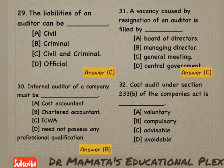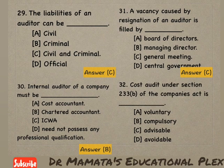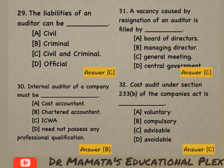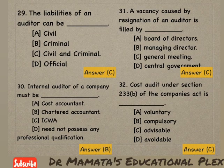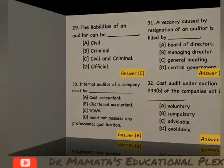Next: Cost audit under section 233B of the Companies Act is — voluntary, compulsory, advisable, or avoidable? Cost audit jo hai under section 233B of the Companies Act woh advisable hai. Option C is the correct answer.